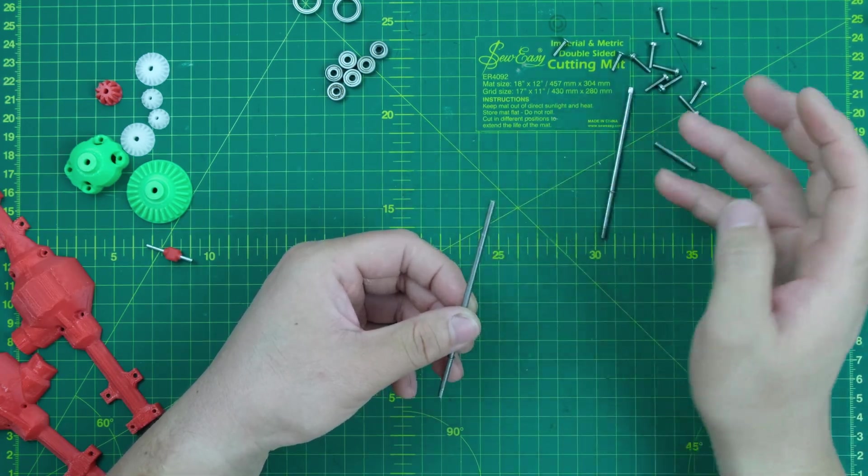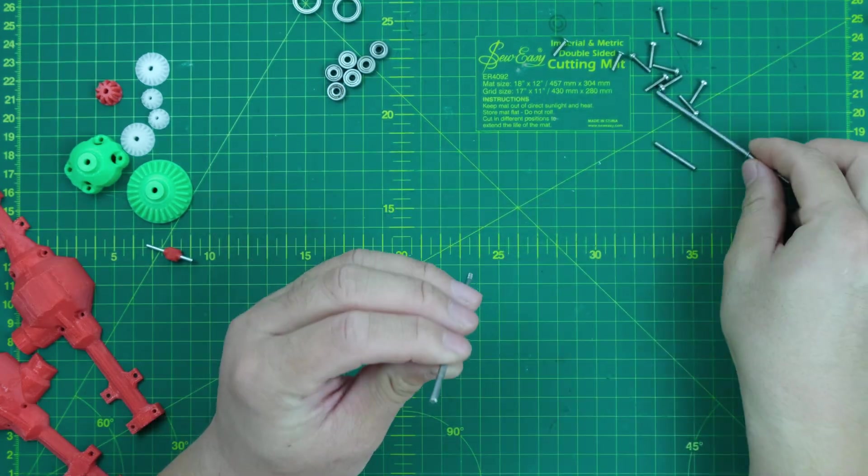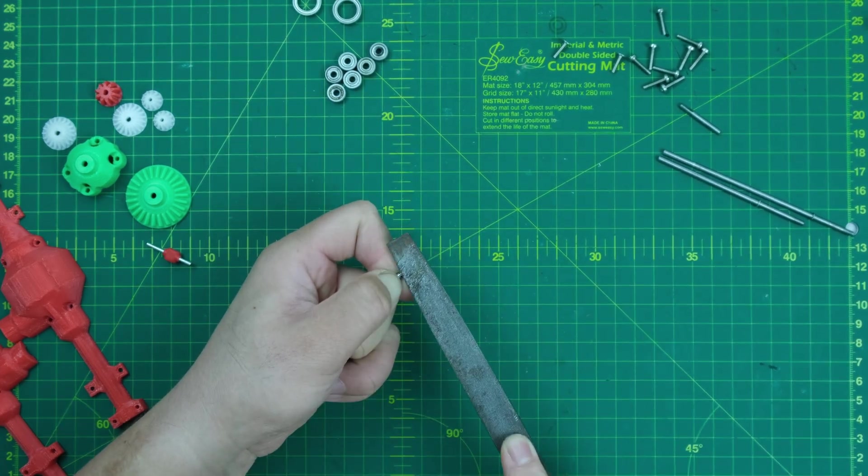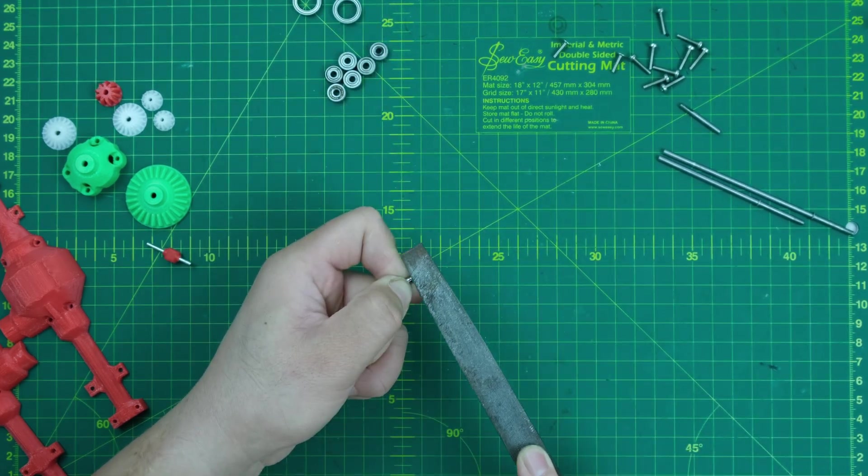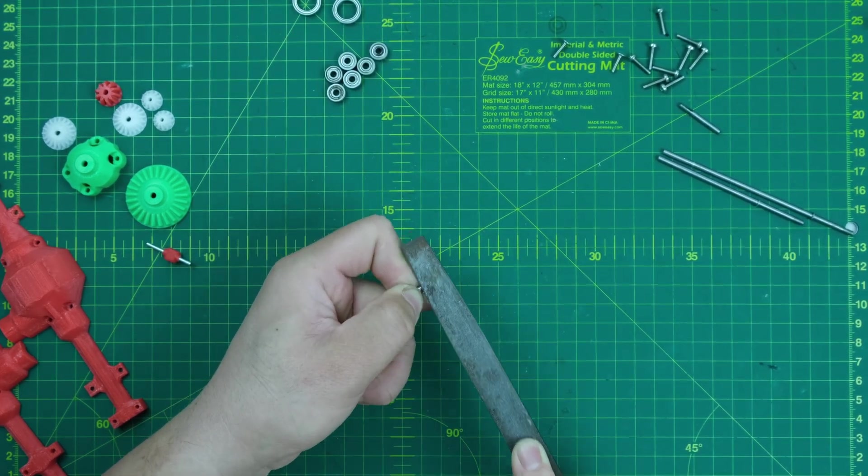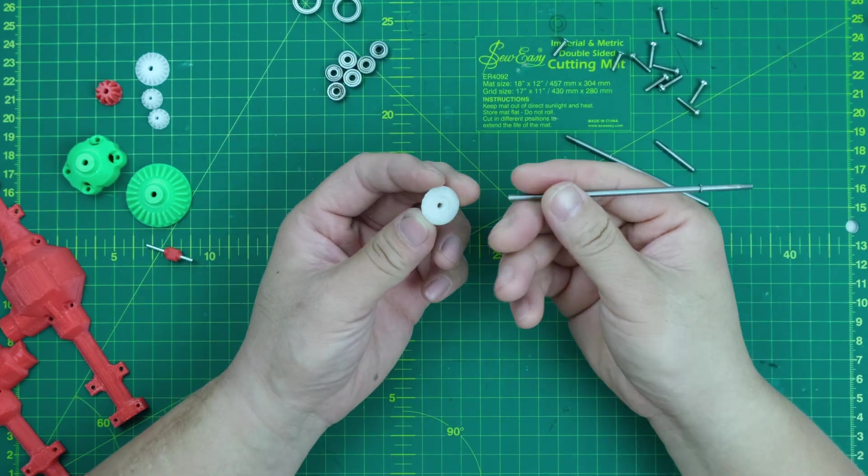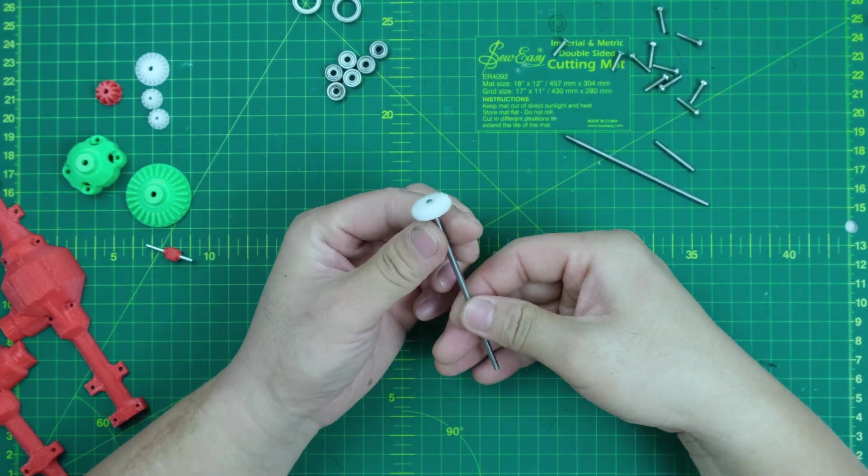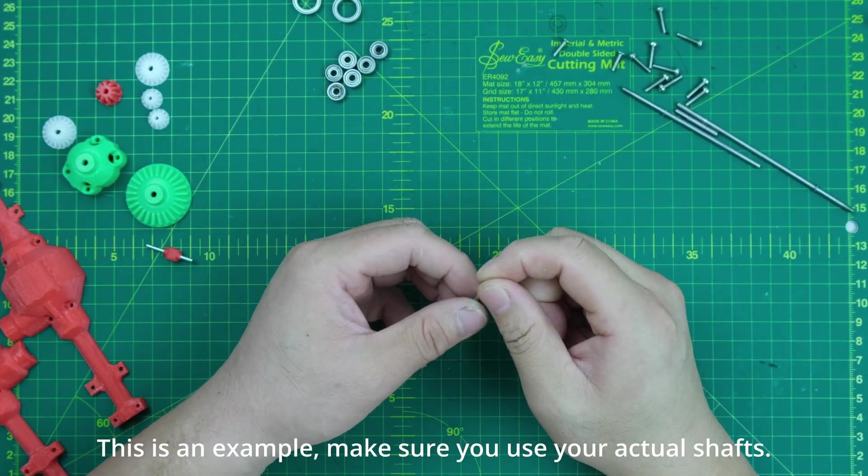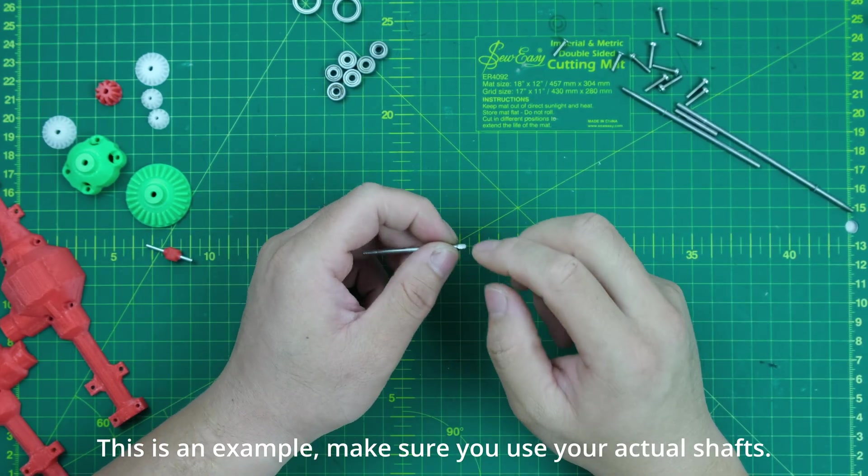The shaft is the only part that you need to process manually. You take a little bit of time and patience. You need to file to make the tip become flat and make the shaft tip a D shape. Then you can put the shaft into the gears. I'm gonna show you how I get this done.